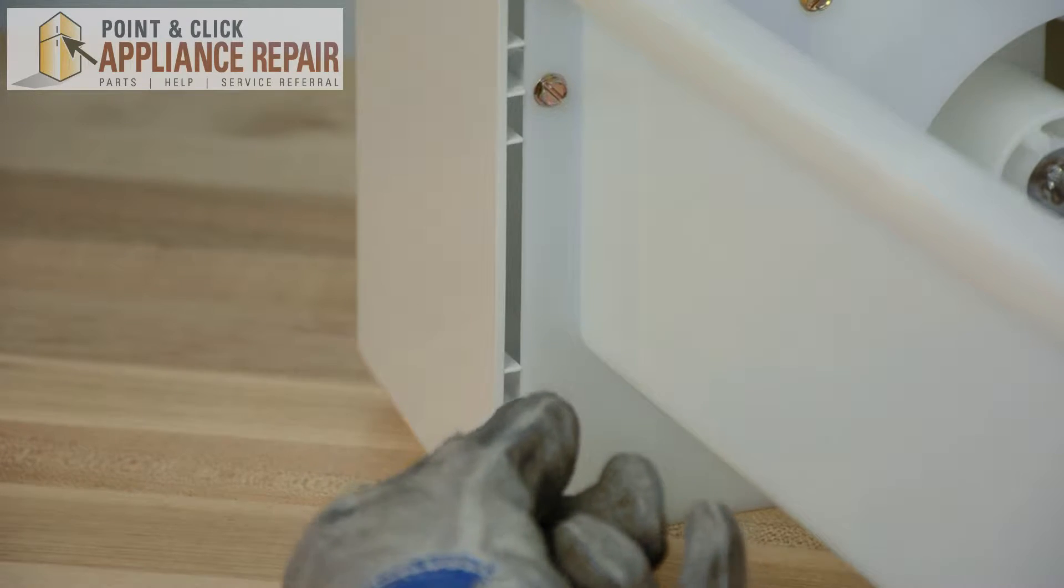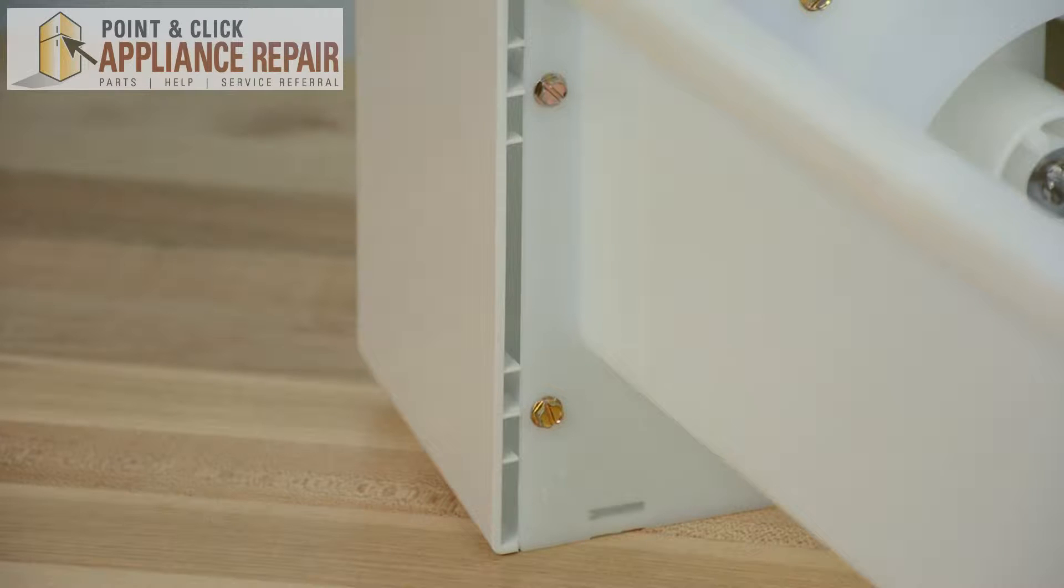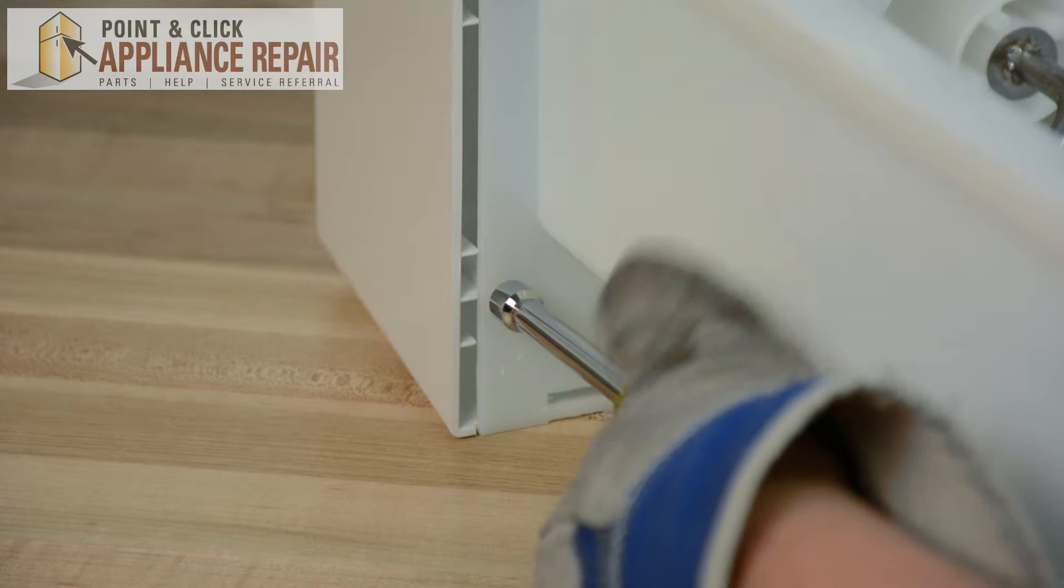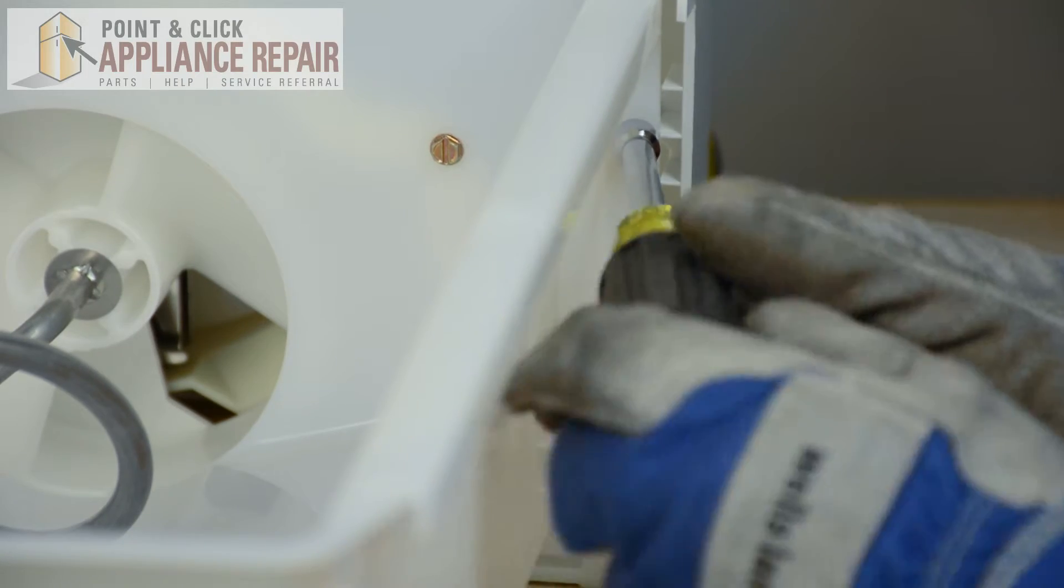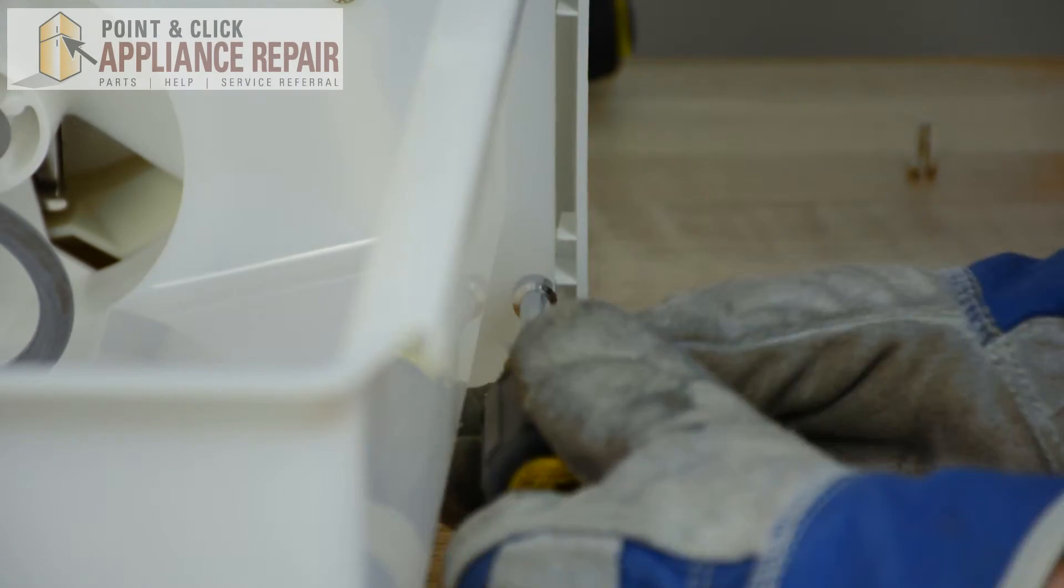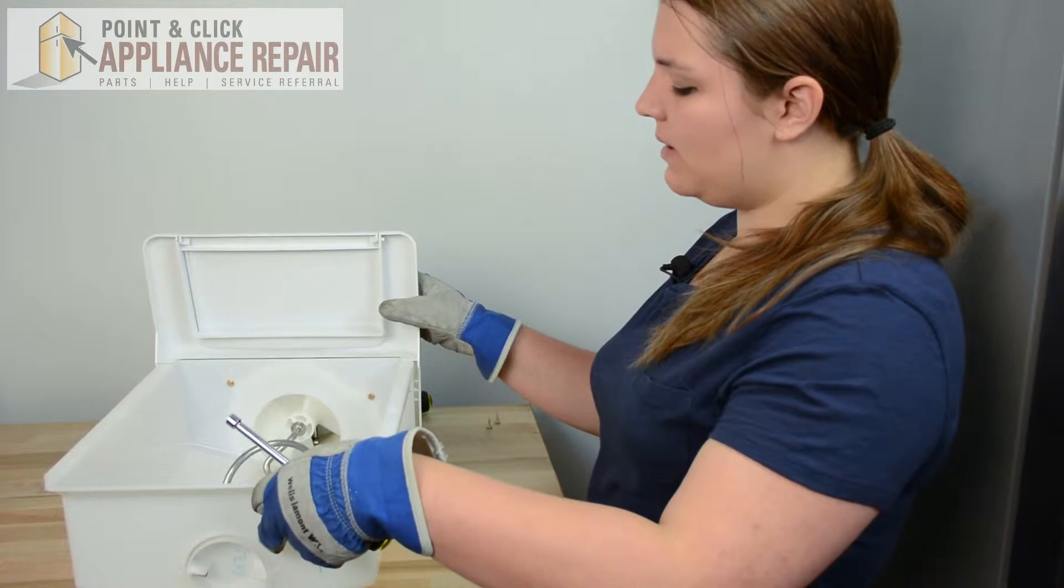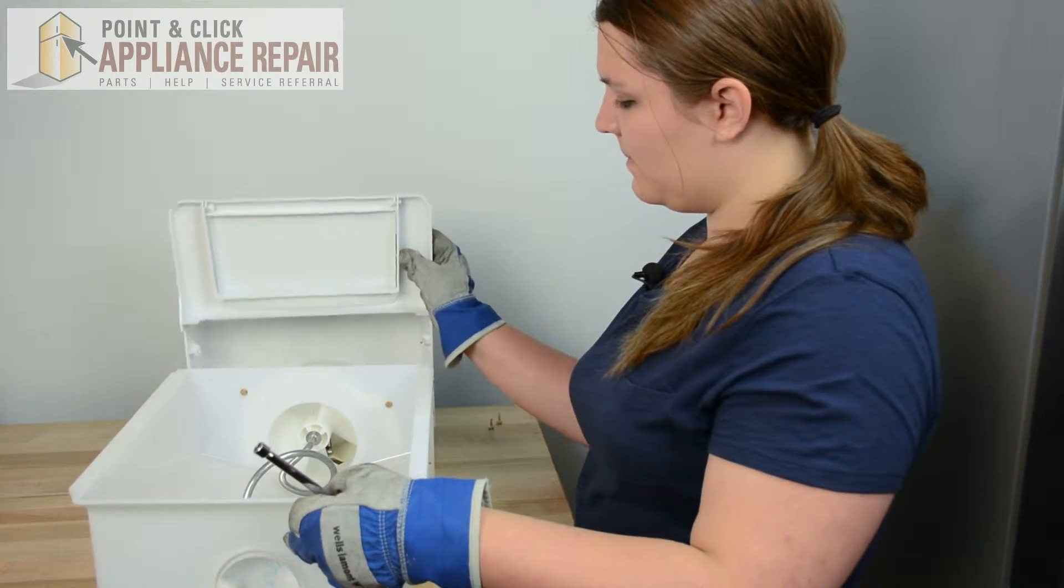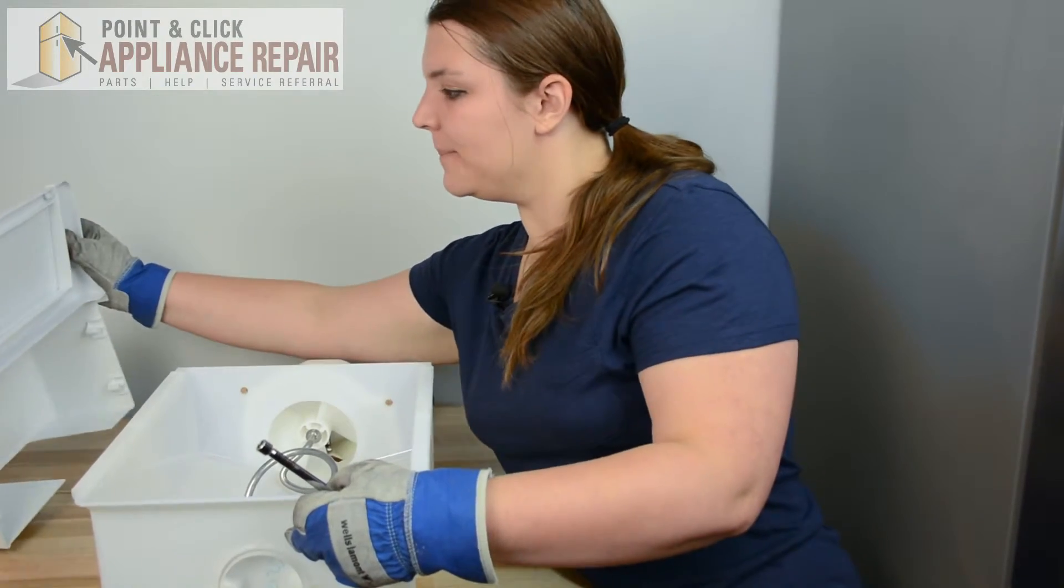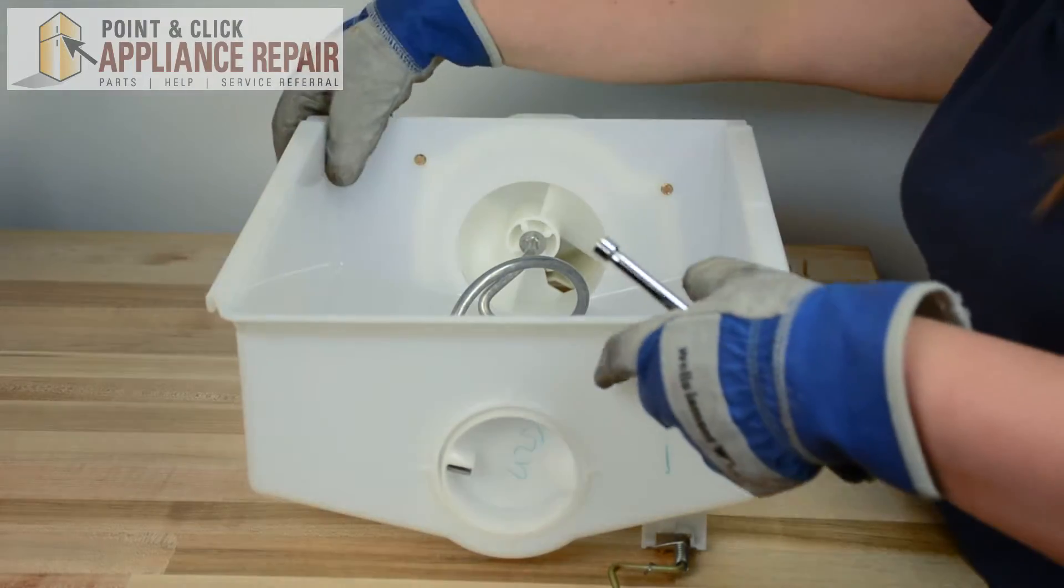We're going to need to remove the quarter inch nuts on the outside of the dispenser. Once the outside screws are removed, you can remove the front panel. Set that out of the way, and now we can flip over the bin.